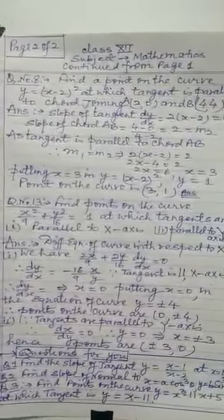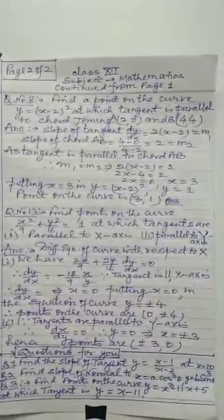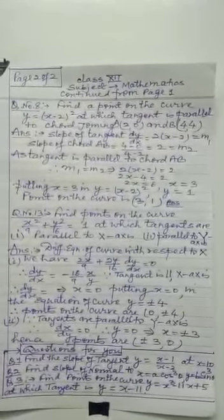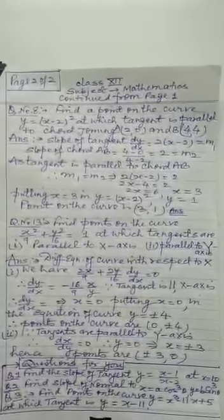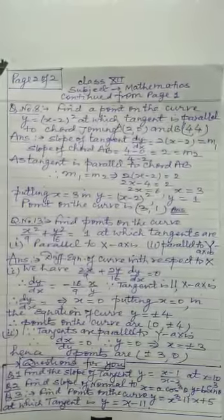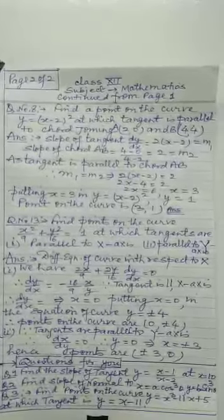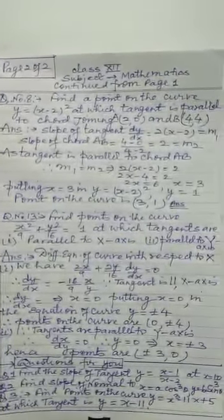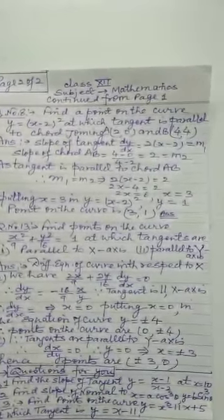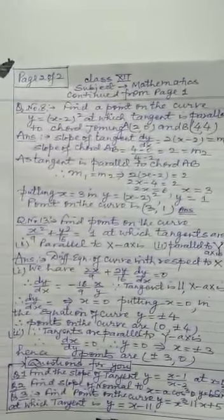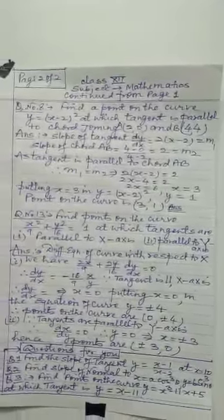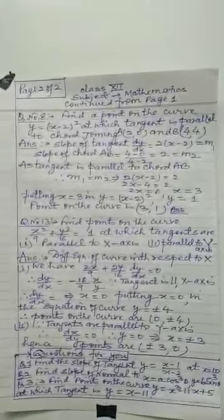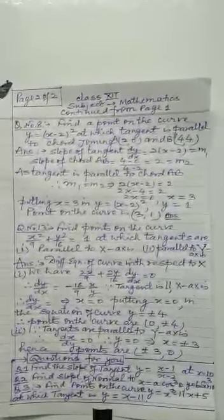Question number 13: find points on the curve x²/9 + y²/16 = 1 where tangents are parallel to (i) the x-axis and (ii) the y-axis. Differentiating gives 2x/9 + (2y/16)(dy/dx) = 0, so dy/dx = −(16x)/(9y). For parallel to x-axis, dy/dx = 0 gives x = 0, and substituting into the curve gives y = ±4, so points are (0, ±4). For parallel to y-axis, dx/dy = 0 gives y = 0 and x = ±3, so points are (±3, 0).